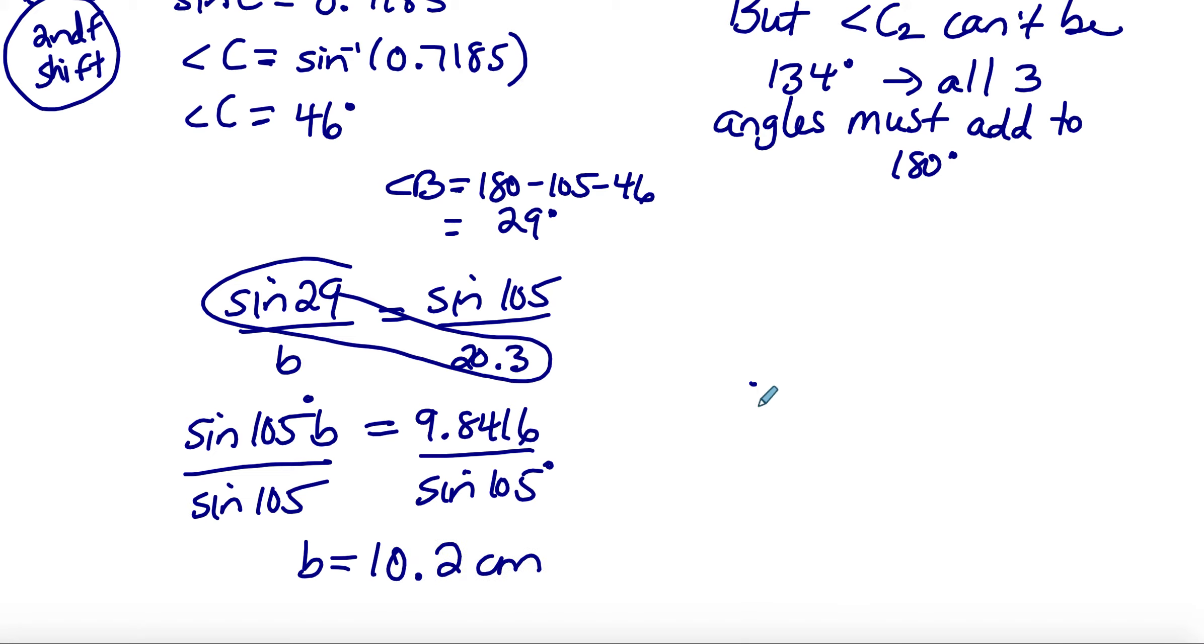We need our therefore statement. We've shown that C has to be 46, B is 29, and side B is 10.2.